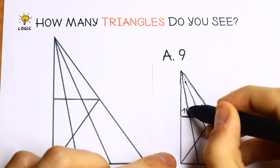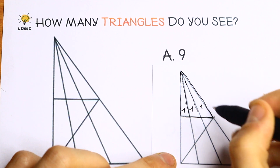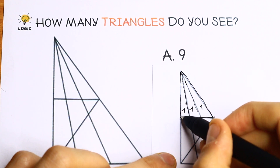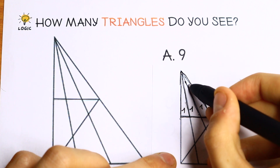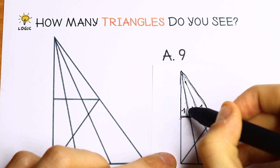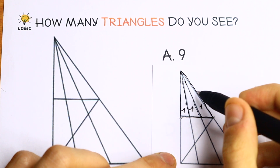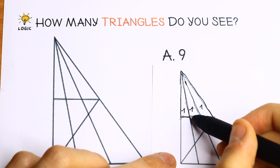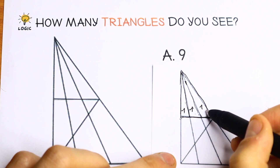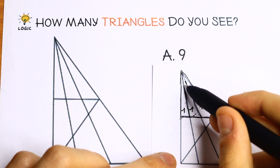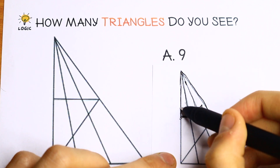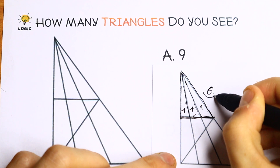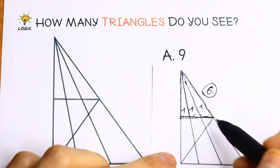If we divide along this line we get three triangles: one, two, three. If we add these two parts — this one and this one — we get a bigger triangle, so that's the fourth one. And if we add the other two parts together, that gives us the fifth one. The biggest combined one is the sixth one. So this top section gives us six triangles inside.